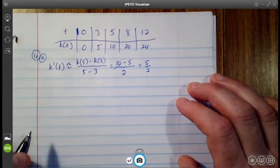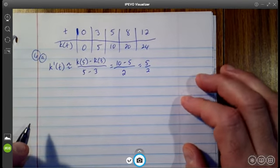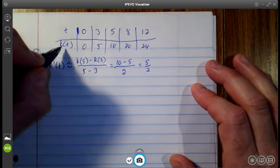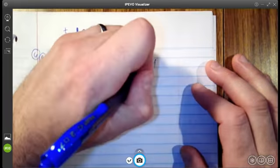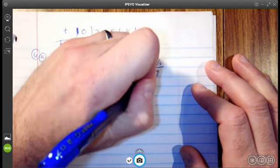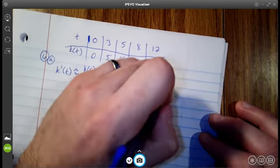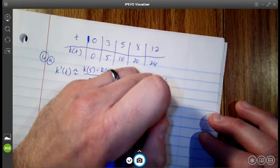Now, it also says indicate units of measure. So if I took the value of k of t divided by t, that's going to be feet per second per second. Of course,